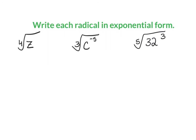Now going the other direction: here are three examples where I start with radicals but write the final answer as an exponent. The fourth root of z is the same thing as z to the power of 1/4. The cube root of c to the power of negative 5: the root is the denominator, so that's c to the power of negative 5 over 3.